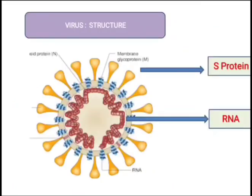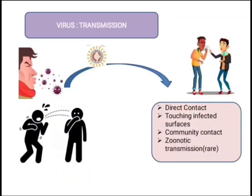Now let us see the structure of the virus. The virus has spikes on its surface which are called S protein. It has M glycoprotein. It has N, which is a capsid protein. And it is an RNA virus, so it has RNA as its genetic material.